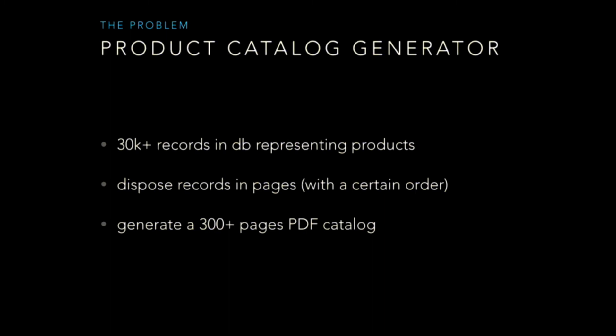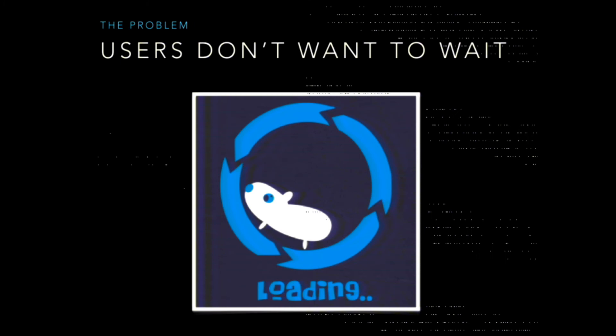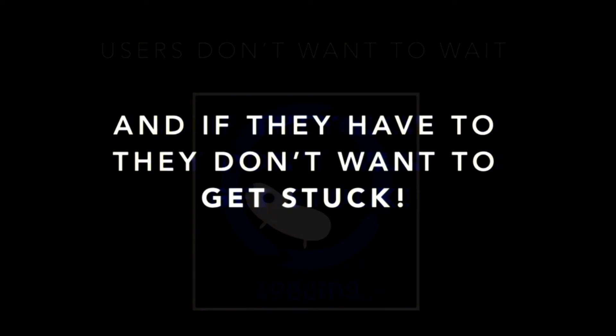For understanding the problem, we can make a simple example. Supposing you want to devise a catalog generator application, and the generator has to generate more than 300 pages in PDF. For doing so, it has to fetch more than 30,000 records in our database representing products, and it wants to dispose records in pages with a certain order. We have heavy operations to do here. But the real problem is that our users don't want to wait until we are doing these heavy operations, and even if they have to, they don't want to know it — they don't want to get stuck.